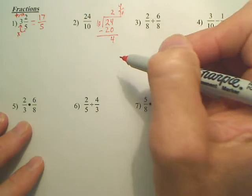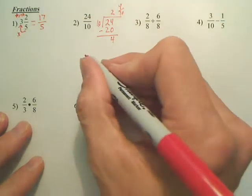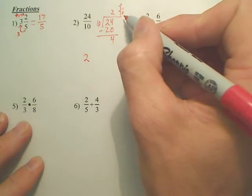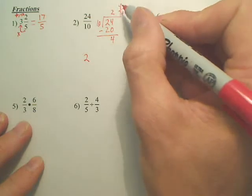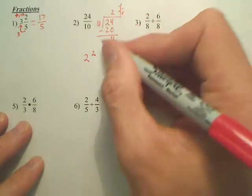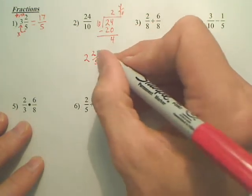Now does 4 tenths reduce? Yes. So my answer is really 2 and, what goes into 4 and 10? 2. 2 goes into 4 twice. 2 goes into 10? 5 times.